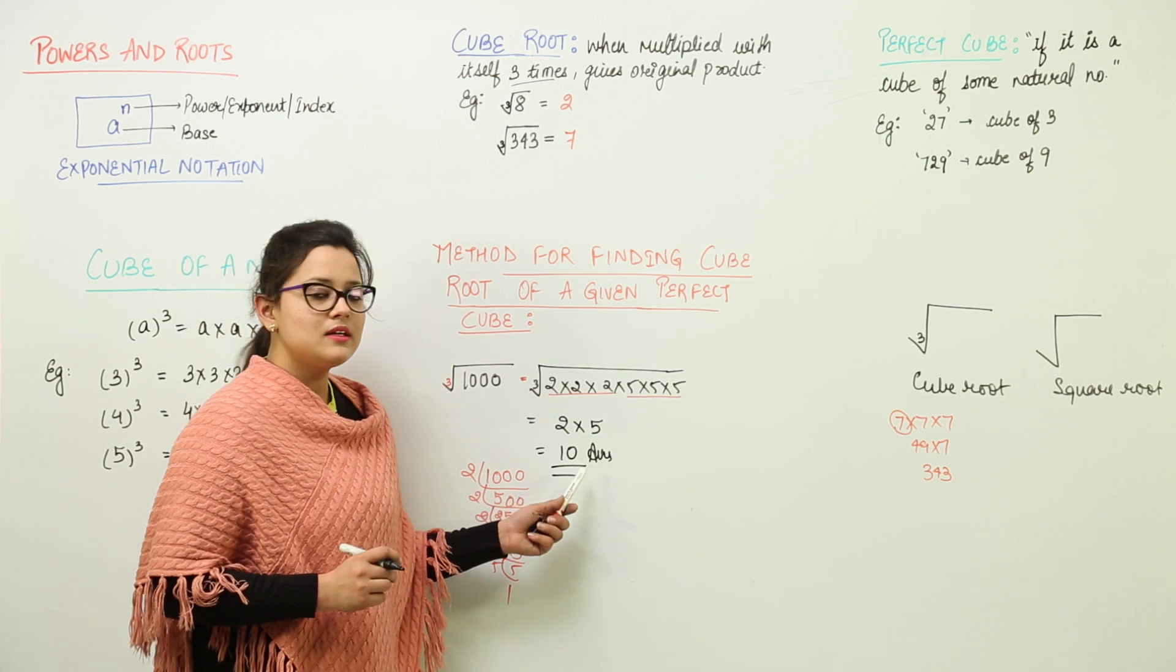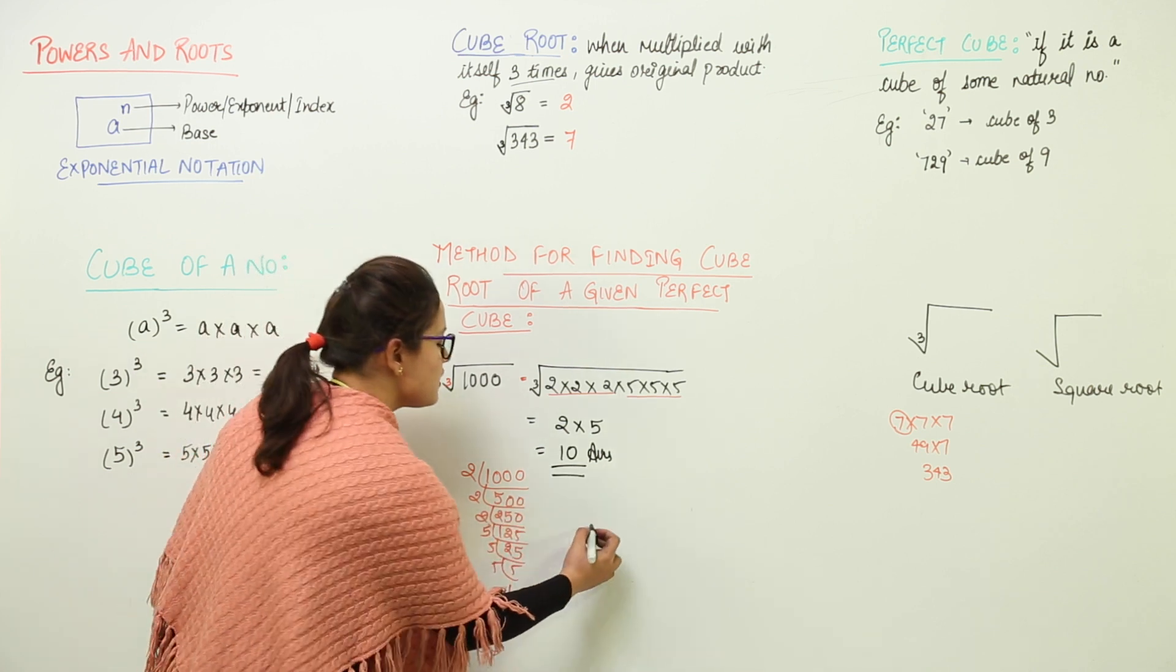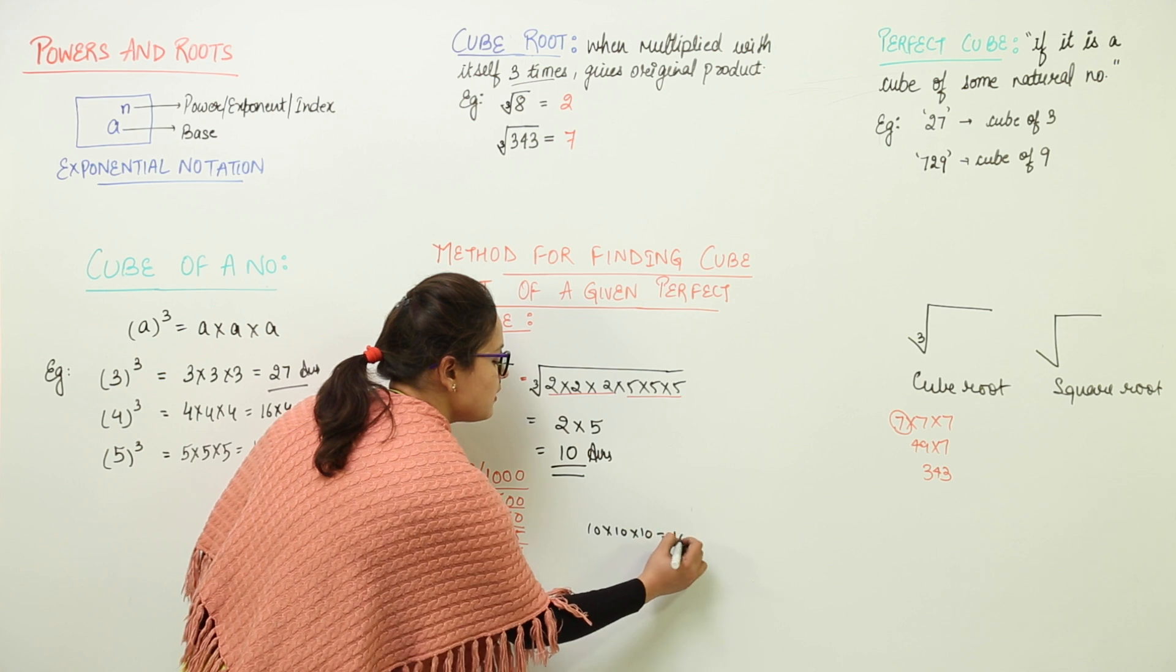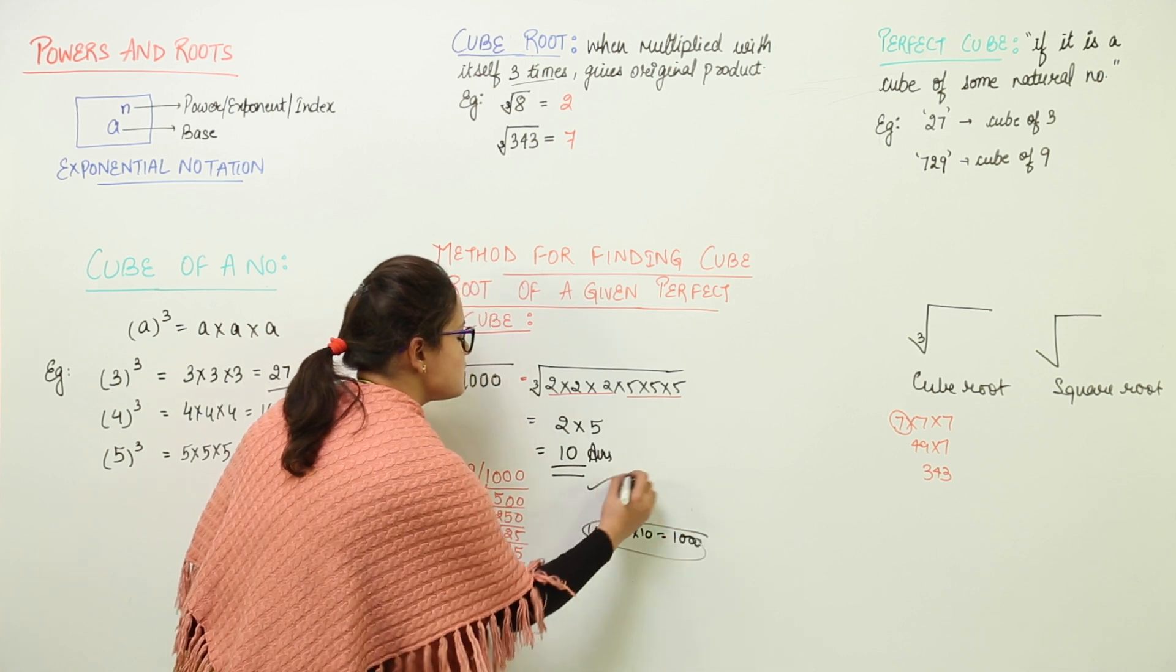You can check multiplying 10 three times, that is 10 times 10 times 10. You are going to get 1000 only. That means our answer is correct.